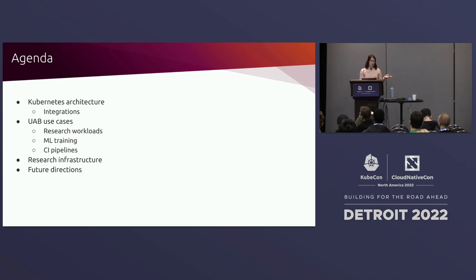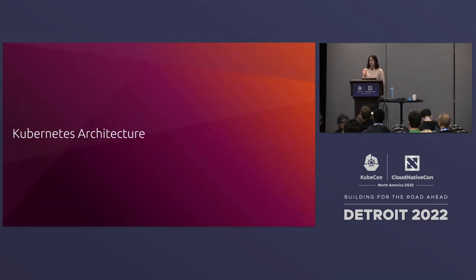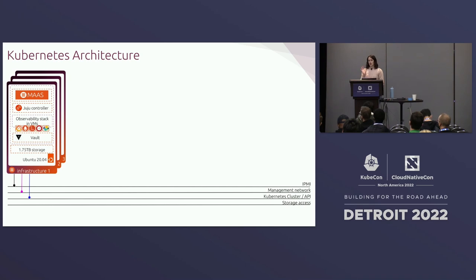My colleague John Paul will go a bit more through what type of research they do and how they leverage that infrastructure. For the Kubernetes architecture, we're talking about a Kubernetes on bare metal deployment. When we talk about bare metal deployments, we want to have some infrastructure nodes — also called management nodes — that are outside of the Kubernetes deployment to be able to manage the Kubernetes environment.